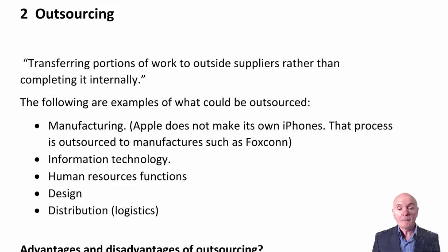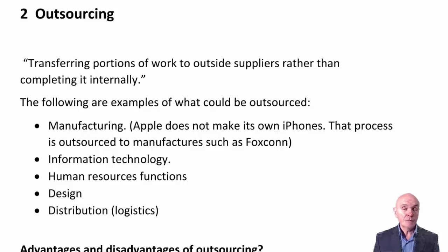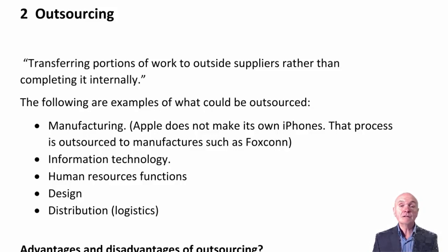Human resources functions — some companies get HR consultants to do recruitment, training, promotion, and they even take part sometimes in grievance and disciplinary procedures. Design — manufacturing companies might be very good at manufacturing but weak in design, and to create a blockbuster product, they will get experts in. Distribution — companies like DHL, UPS, and TNT are logistics companies who handle supply of raw materials and delivery of finished goods to customers, which can be very expensive and inefficient to run yourself.